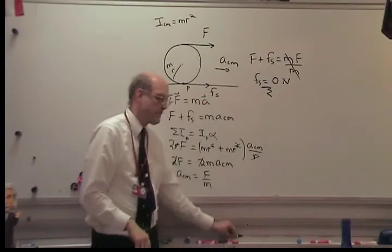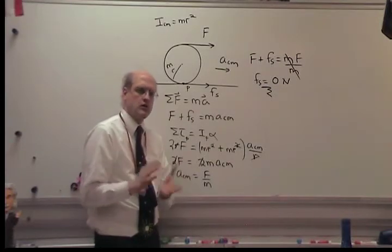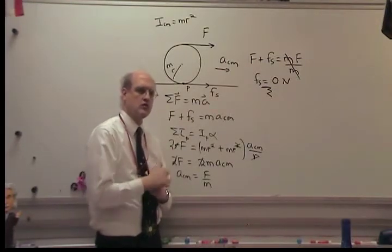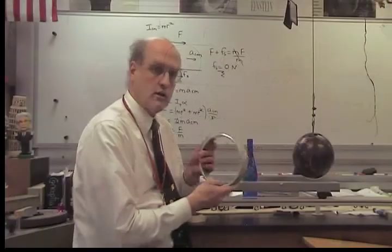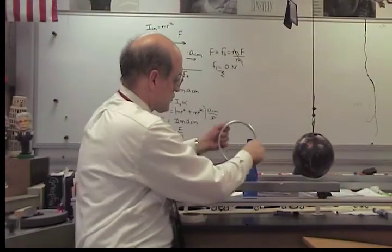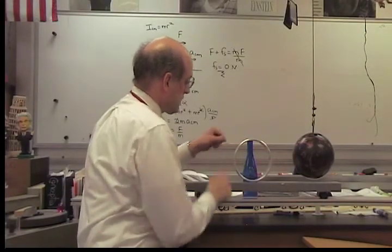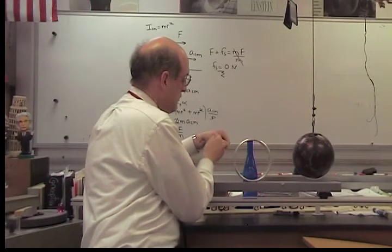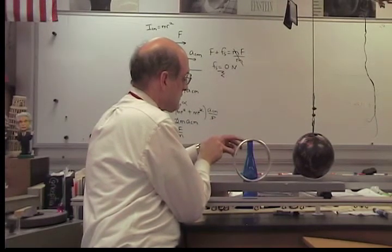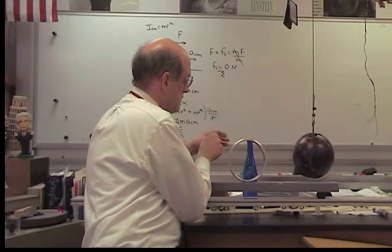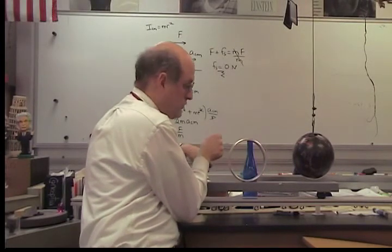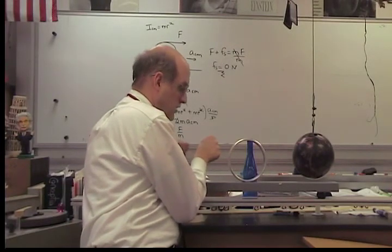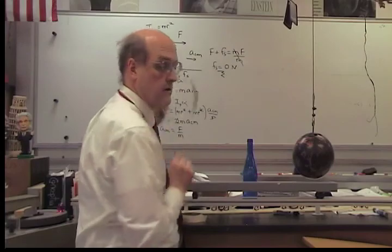Now I'll demonstrate this using the low-friction cart and a hoop with a string exerting a force at the top of the hoop. I'm going to exert a force to the left at the top of the hoop. According to theory, there is no friction, so there should be no horizontal force on the gray cart due to the hoop — the gray cart should stay at rest. As it did.